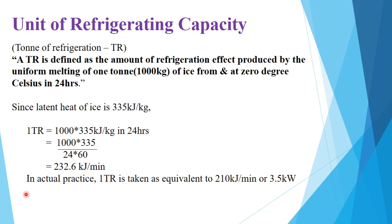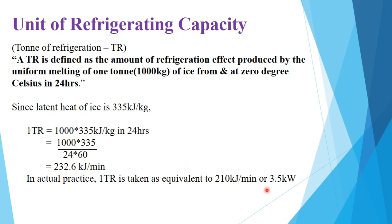One ton of refrigeration is equal to 232.6 kilojoules per minute. In actual practice, one TR is taken as equivalent to 210 kilojoules per minute or 3.5 kilowatts.